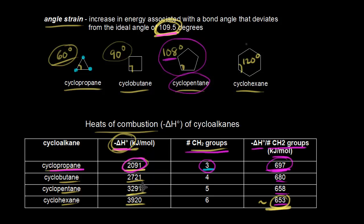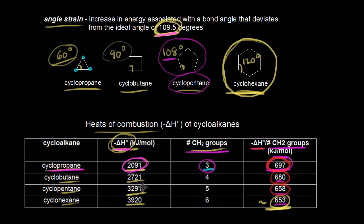Cyclohexane is about as stable as an open-chain alkane, so the idea of cyclohexane being flat must not be true — cyclohexane isn't flat, as we'll see in later videos. Cyclohexane is the most stable out of these cycloalkanes. Cyclopentane is a little bit higher in energy and therefore a little bit more unstable. Cyclobutane is even higher, and cyclopropane at 697 kilojoules per mole per CH2 group is the most unstable — the highest heat of combustion and highest in energy.